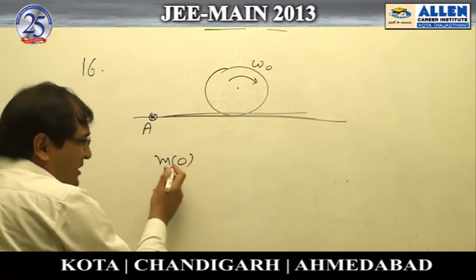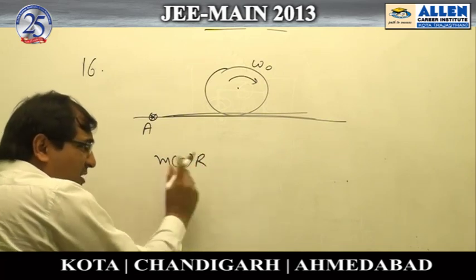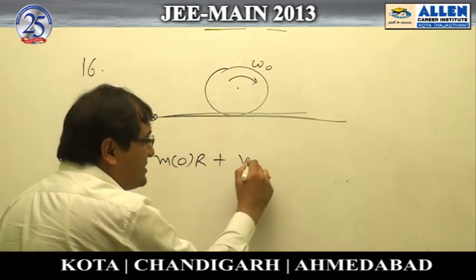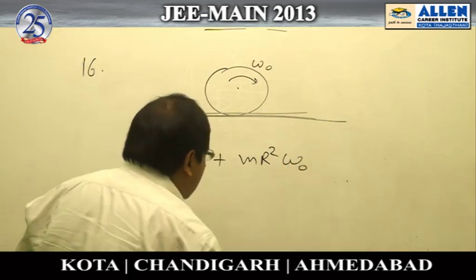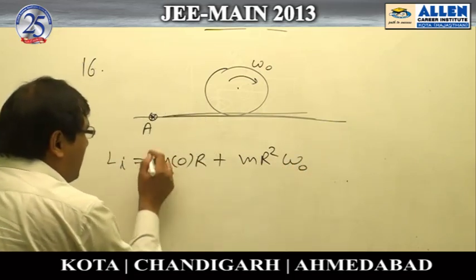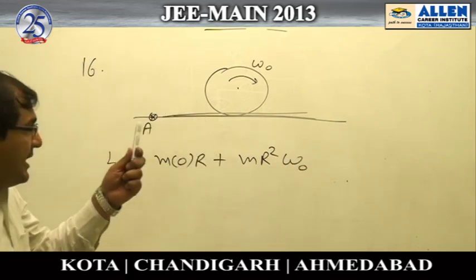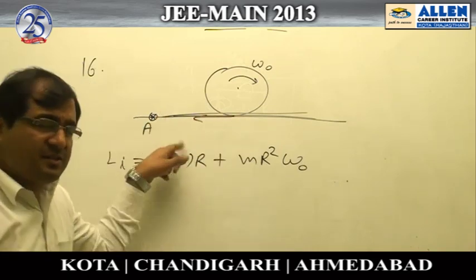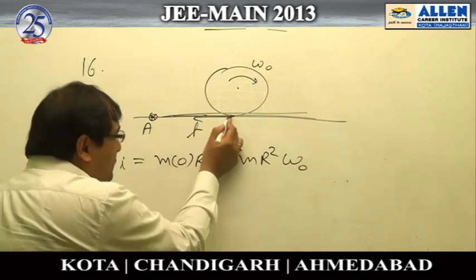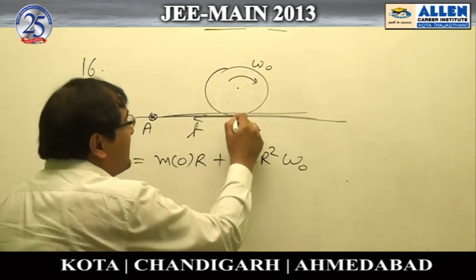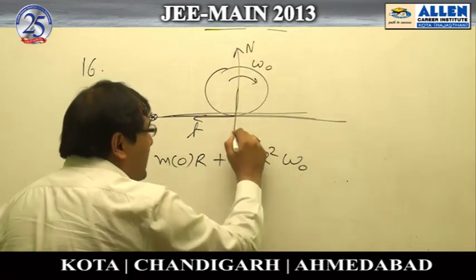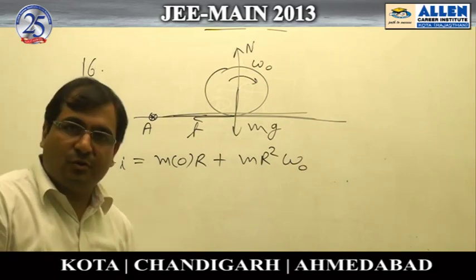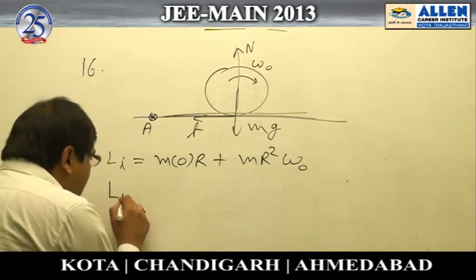Initially, the center of mass has no translational velocity, so the initial angular momentum about point A is mr²ω₀ (angular momentum about the center of mass). Angular momentum about point A remains conserved because the friction force passes through point A, producing no torque, and the normal contact force and mg balance each other.